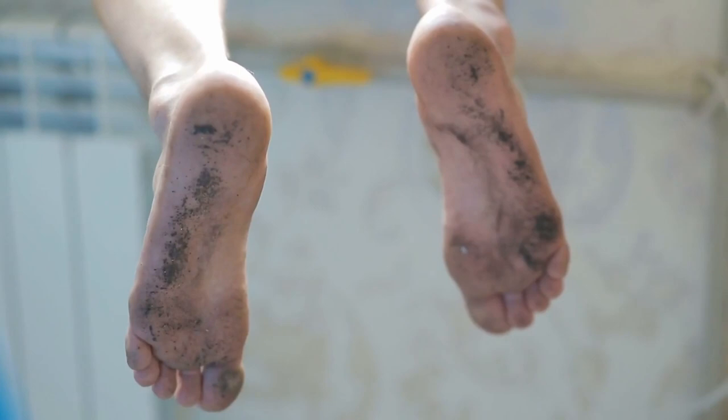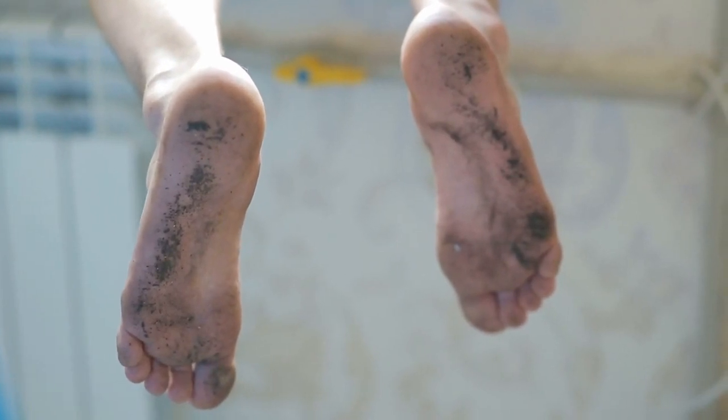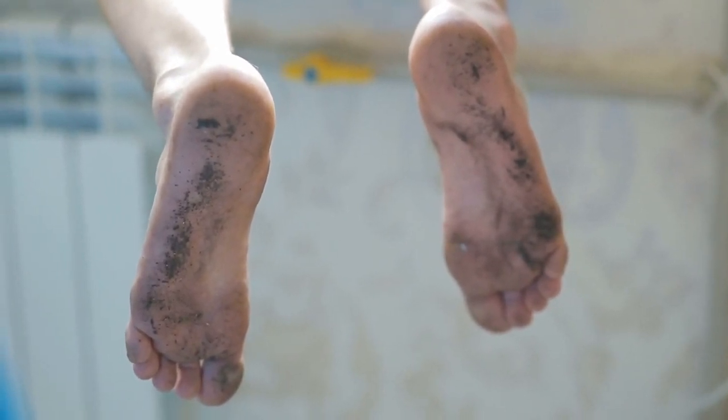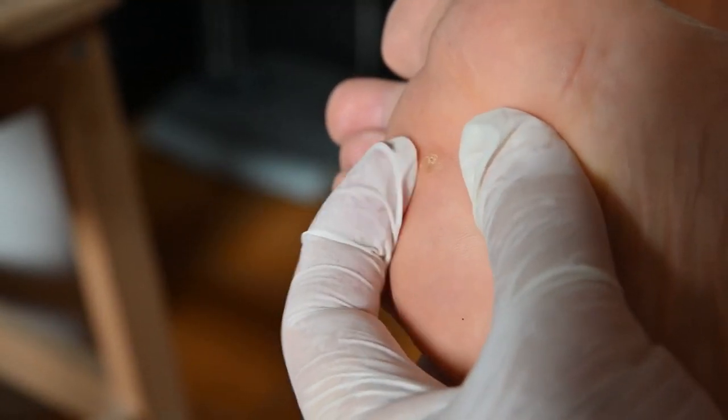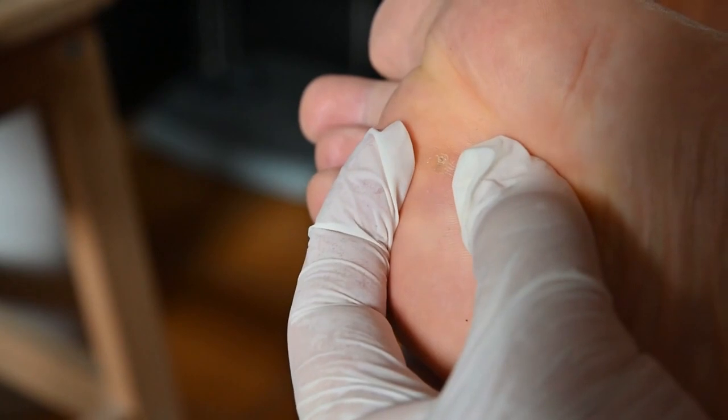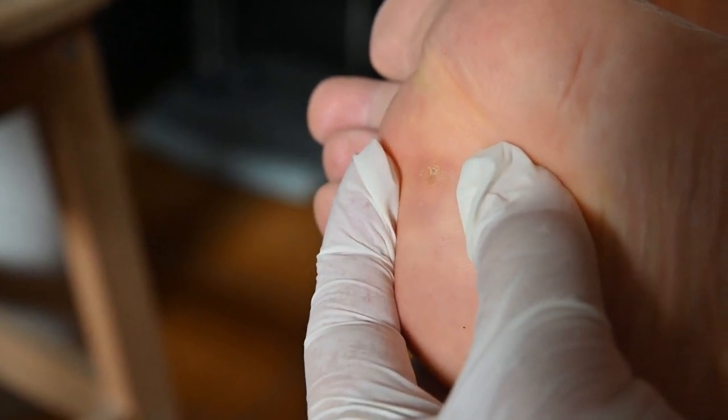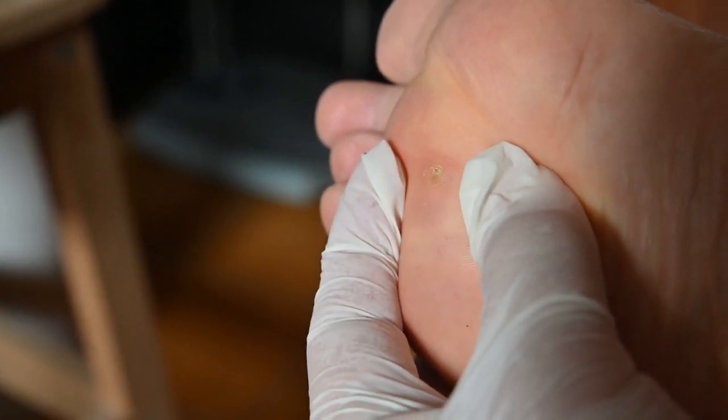The modus operandi of sand fleas involves burrowing into the skin, typically targeting the toes or feet. The resulting skin lesions exhibit a distinctive appearance, starting as white disc-like shapes with a central black point, evolving into uniformly dark lesions over time.